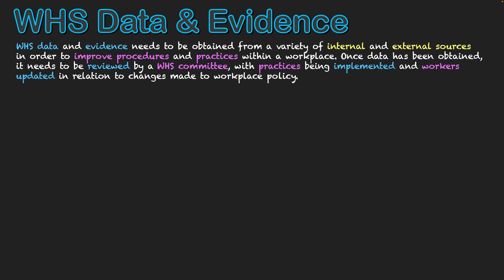Once data has been obtained, it needs to be reviewed by the WHS committee, with practices being implemented for workers and them being updated in relation to the changes made to the workplace. We basically need to make sure we're constantly getting data about WHS that applies to our workplace, reviewing this data, and then changing our workplace practices so they're at their best possible state based on a data-informed decision.